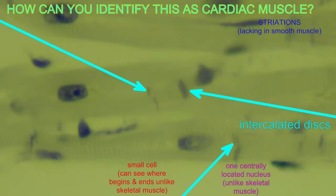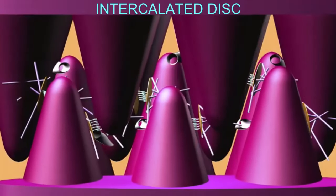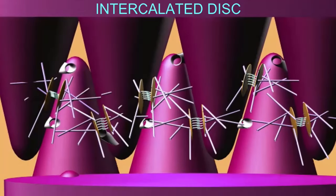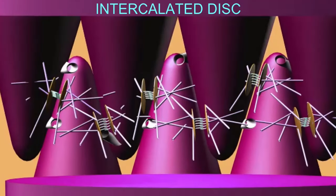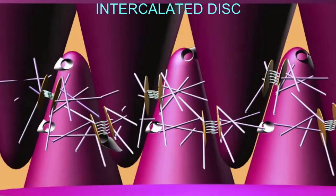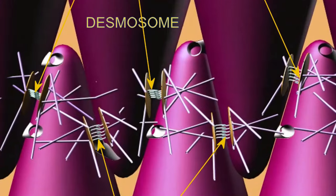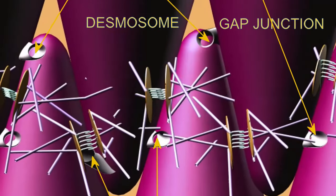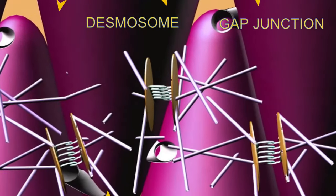Two types of intercellular junctions are found: desmosomes for strength and gap junctions to allow the flow of ions. These intercalated discs are only present in cardiac muscle and are a defining feature in microscopic views of cardiac muscle.